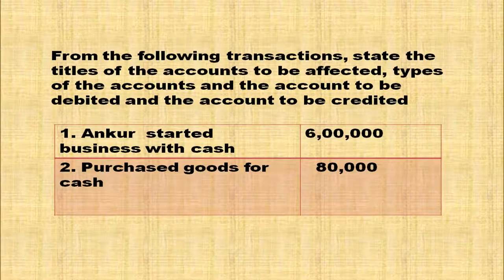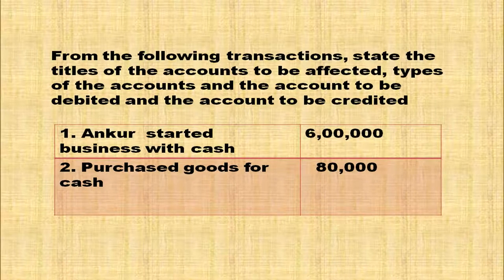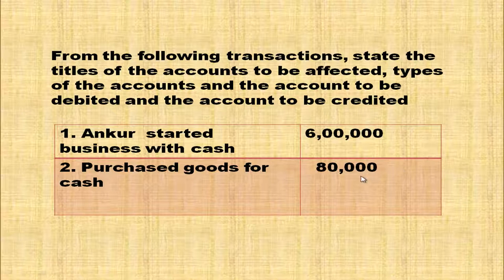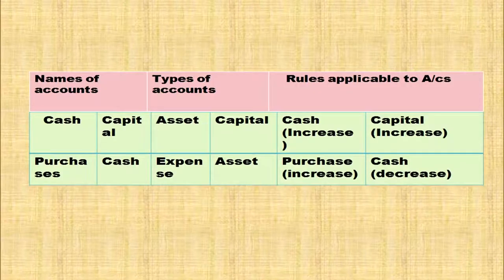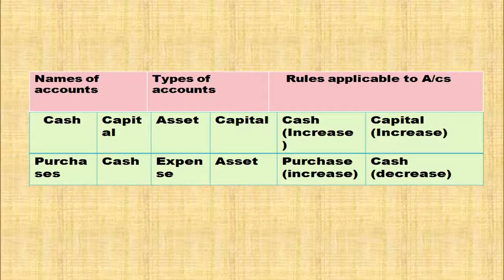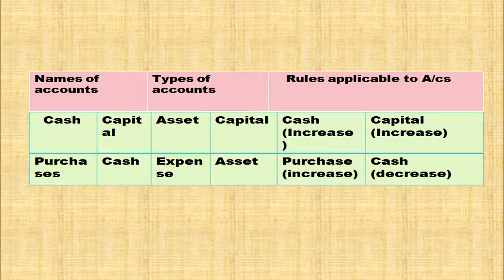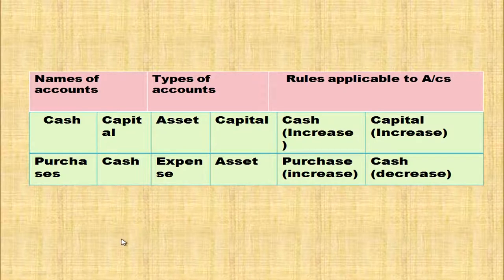From the following transactions, state the title of accounts to be affected, types of accounts, and the account to be debited and the account to be credited. Ankur started business with cash Rs. 6 lakh. The affected accounts are cash account and capital account. Cash is an asset account; capital falls under the capital account. Asset increased — cash is debited; capital is credited.